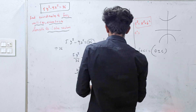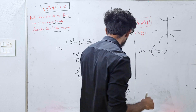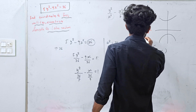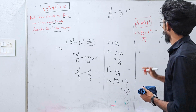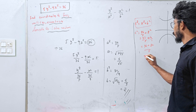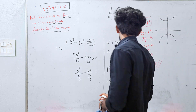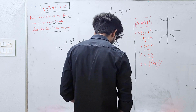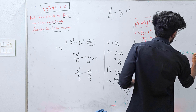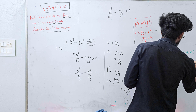So c² = a² + b². A² is 36/5, plus b² which is 4 (that is 2²). So c² = 36/5 + 4. Cross-multiplying: (36 + 20)/5 = 56/5. So c = √(56/5). Therefore the foci are (0, ±√(56/5)) on the y-axis.